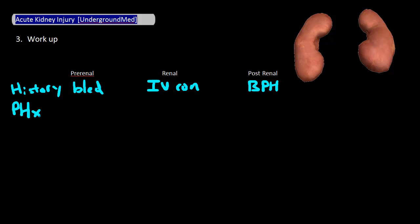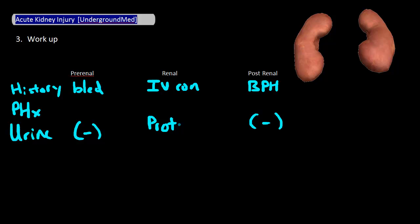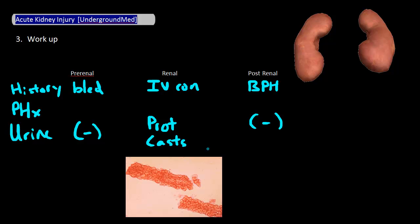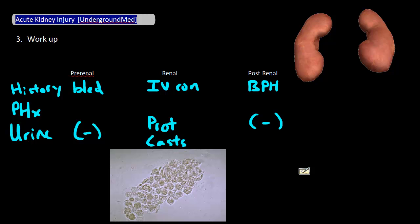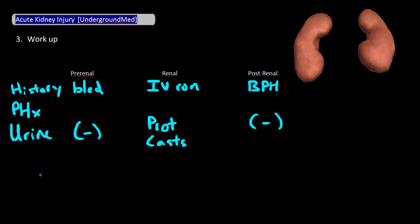There's also a host of labs and tests to help determine the etiology of the AKI. A very important one is looking directly at the urine — both urine dipstick and microscopy. Finding protein on dipstick suggests a renal cause such as glomerular disease. Blood in the urine and red blood cell casts also suggest a glomerular, or renal, cause. Muddy brown casts suggest acute tubular necrosis. White cell casts suggest acute interstitial nephritis, often caused by drug reactions in the renal tubules.